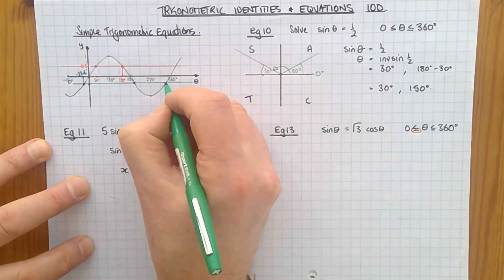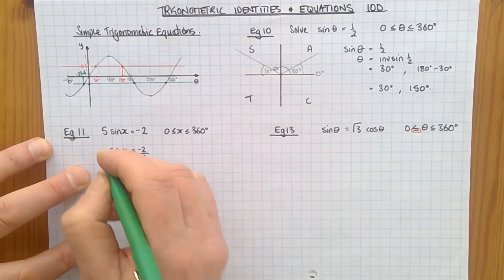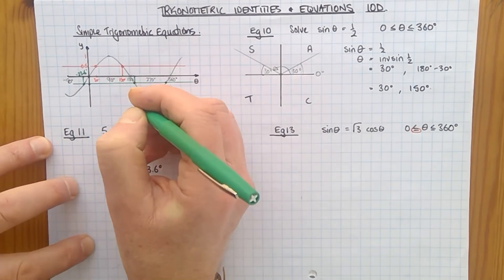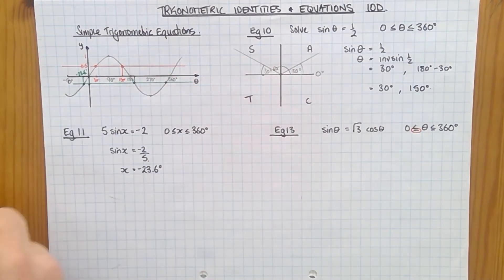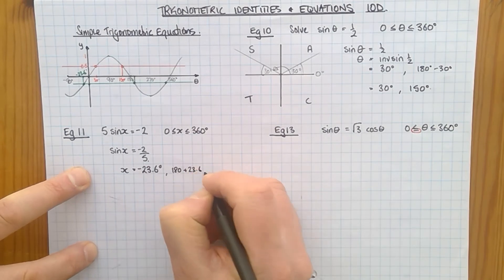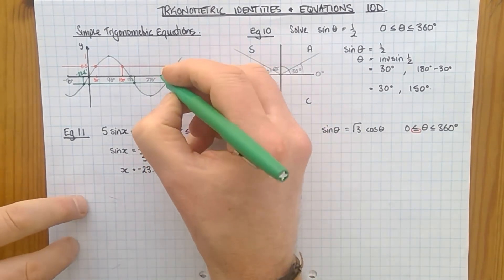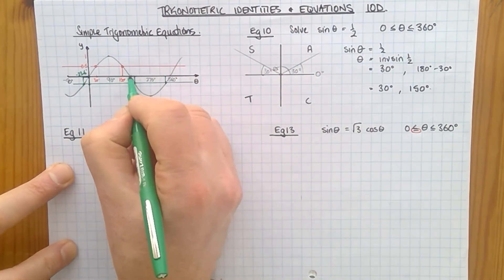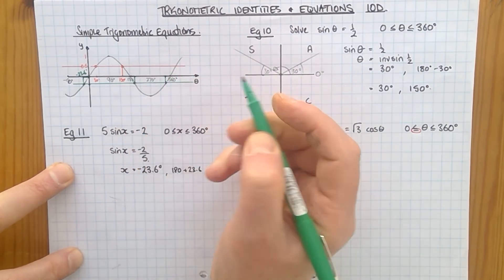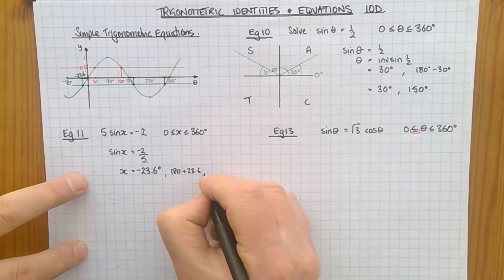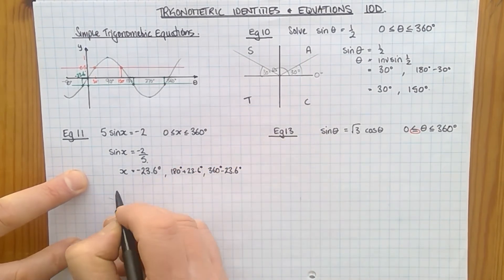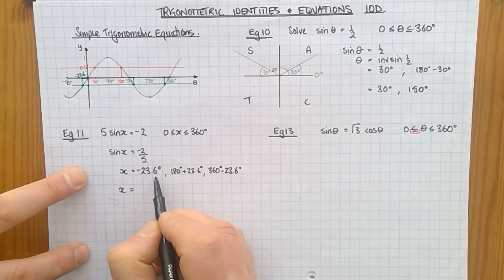So I'm going to use a green pen now on the sine curve for this one. So minus 2 fifths minus 0.4 is going to be about there. So let's draw my line. There's the primary value minus 23.6. So that is minus 23.6. But that's not within my range. The values that are within my range are that one and that one. But I can see using a bit of symmetry that if that is minus 23.6, then that has to be 23.6. So I can work out that this value here is 180 plus 23.6.